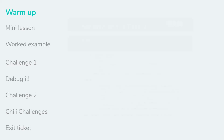Each lesson is structured into six parts followed by an optional Chili Challenge extension and exit ticket. Students then work through an example system which they build as a class before attempting challenge one and two in independent groups.